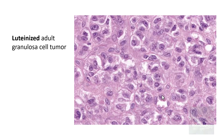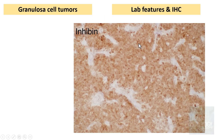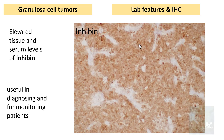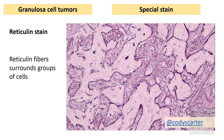The luteinized adult granulosa cell tumour is a variant where the cells have abundant eosinophilic cytoplasm and lack the typical grooved nuclei; instead, prominent nucleoli are seen. Serum levels of inhibin are increased, and immunohistochemically it stains positive for inhibin, which is useful in diagnosing and monitoring these patients on treatment. A reticulin stain shows reticulin fibers surrounding groups of granulosa cells in a nested pattern.